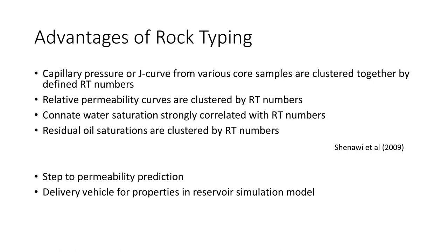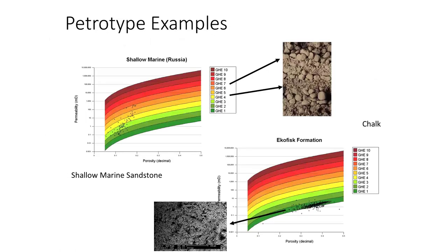The advantages of rock typing were laid out quite nicely by Shenawi in his paper back in 2009. These rock type clusters - capillary pressures and J-curves from various core samples cluster together by rock type numbers. You can cluster relative permeability curves, you can cluster connate water saturations, you can cluster residual oil saturation. So all these things are important in reservoir simulation. It is through rock types that essentially we deliver porosity, permeability, and other petrophysical properties into our simulation model. So it's naturally the link between the geology and the engineering. Also, rock types are useful in the prediction of permeability, because if you know the porosity and you know the rock type, then you have a much better definition of the permeability.